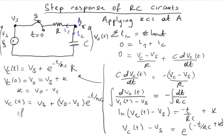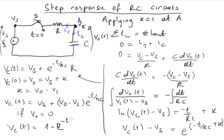Now if we suppose that at time t equals 0 there is no voltage across the capacitor, then vc(t) equals VS times (1 minus e raised to the power negative t over RC), because VS is common. That is the expression for the voltage governing the charge in the capacitor.